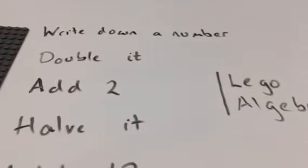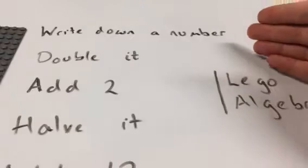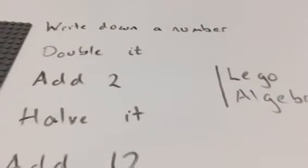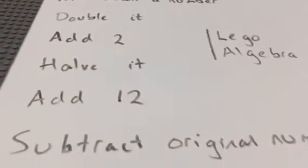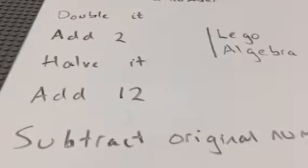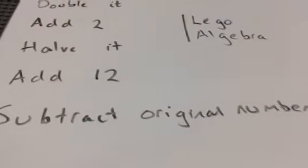Here are the steps: we have to write down a number, then double it, then add 2, then halve it, then add 12, and then we have to subtract the original number. Let's see what you've done using Lego to demonstrate that.